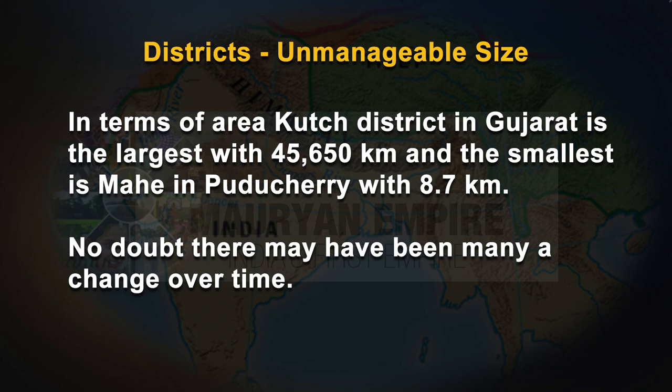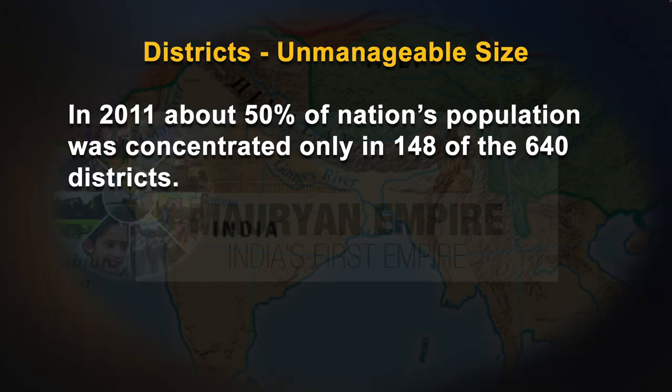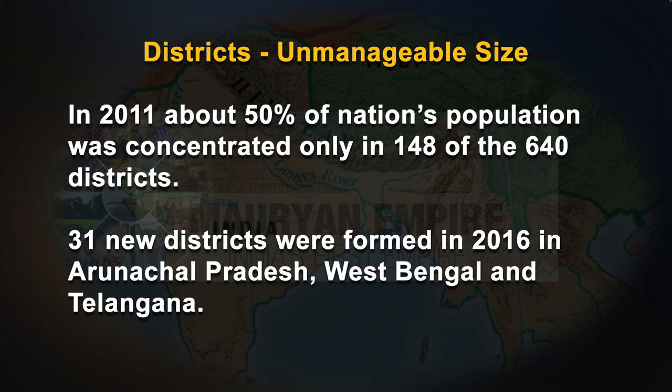There have been many changes over time. As districts are formed at different points in time based on different considerations, there is uneven distribution of population between districts within states and across the country, and the problems become complex with population growth in some districts, particularly urban and economic ones. In 2011, the average district population in the country was 1.9 million. About 50% of the nation's population was concentrated in only 148 of the 640 districts. 31 new districts were formed in 2016 in Arunachal Pradesh, West Bengal, and Telangana.